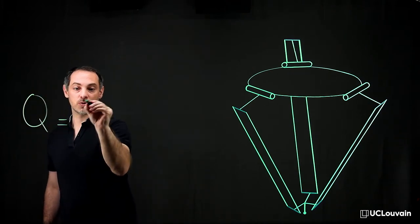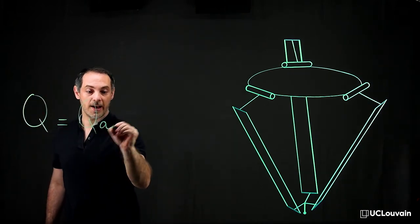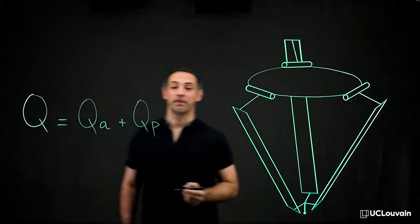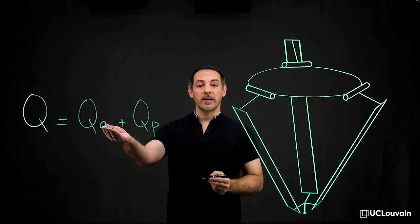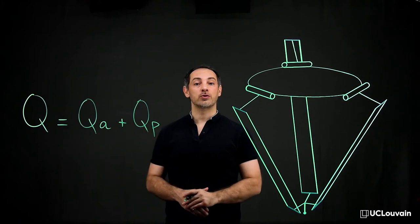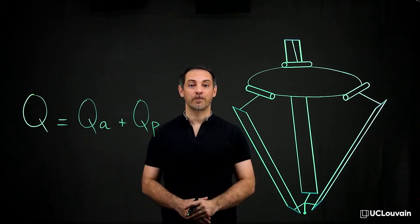Q is equal to Q_a plus Q_p, where Q_a refers to the actuation forces and torques, and Q_p refers to the passive forces and torques.